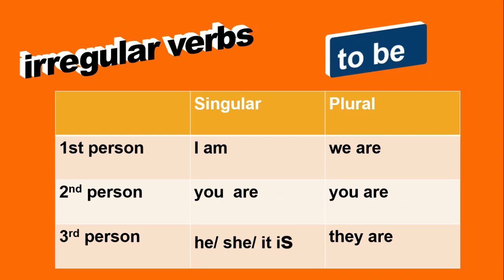Let's look at irregular verbs. We're going to take the verb 'to be.' If we conjugate it: I am, you are, he/she/it is, we are, you are, they are. Although this is an irregular verb, in the third person it is still going to end with an S.